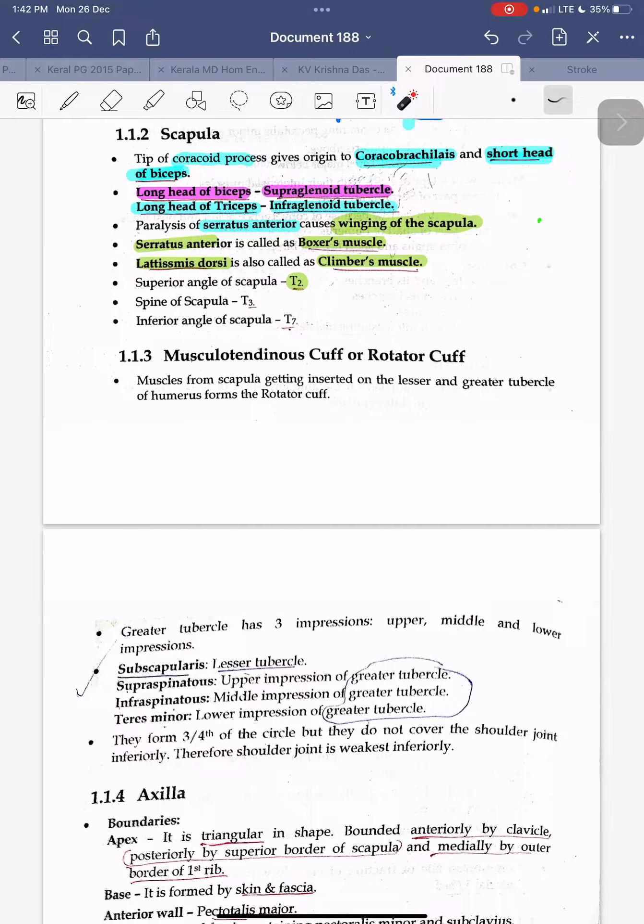Superior angle of the scapula is at the level of T2. Spine of the scapula is at the level of T3, and inferior angle of scapula is at the level of T7.